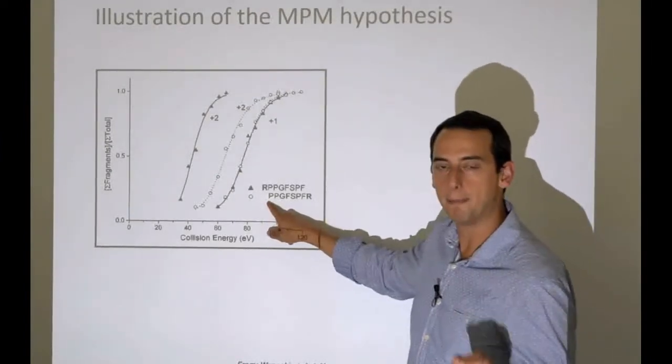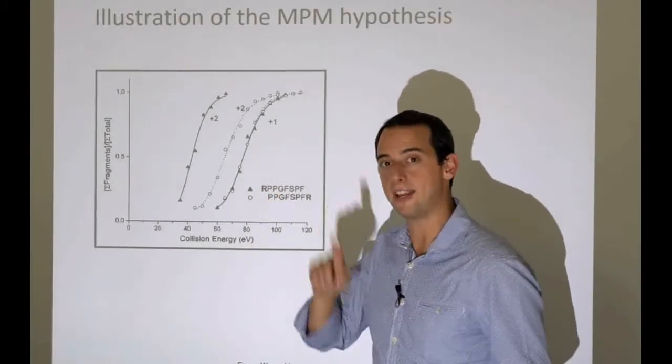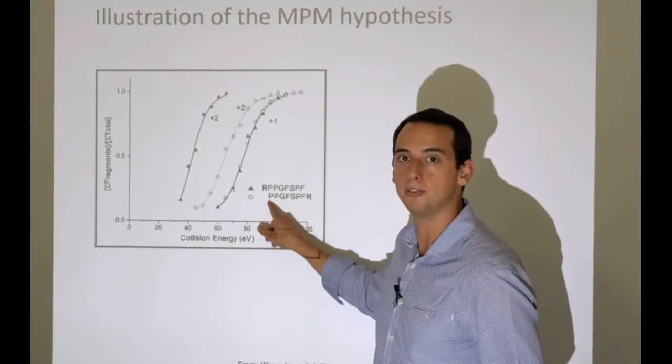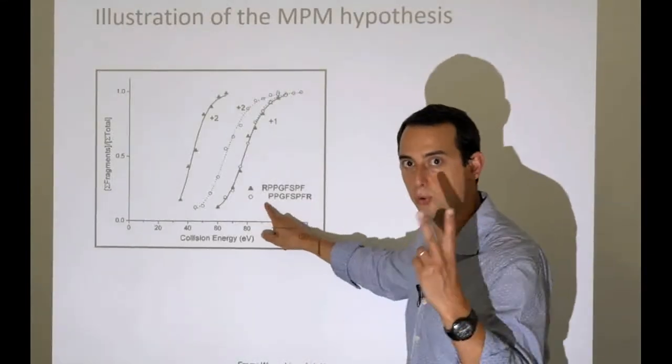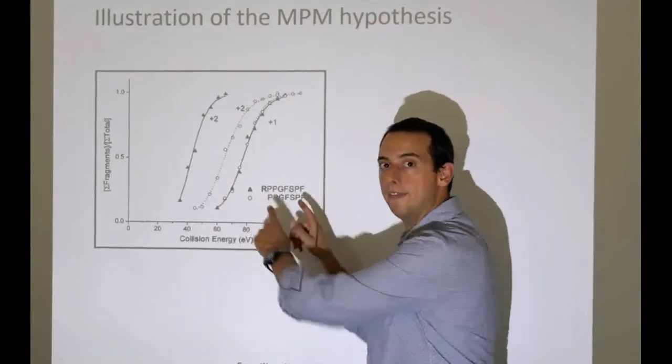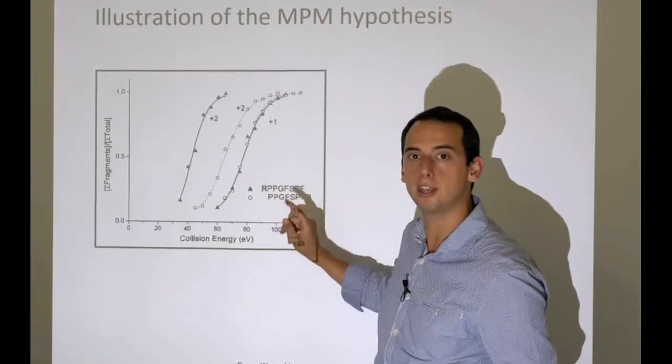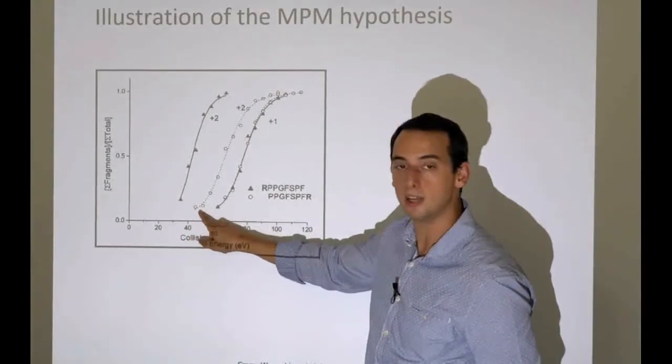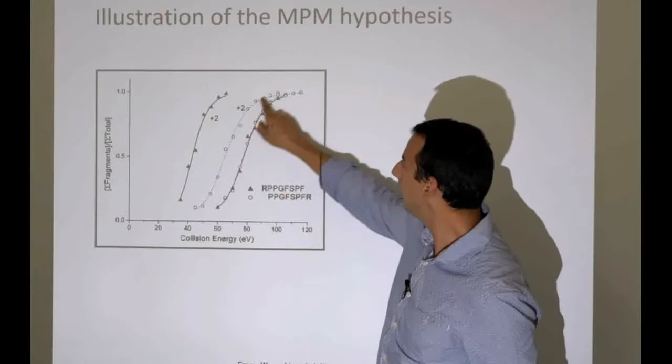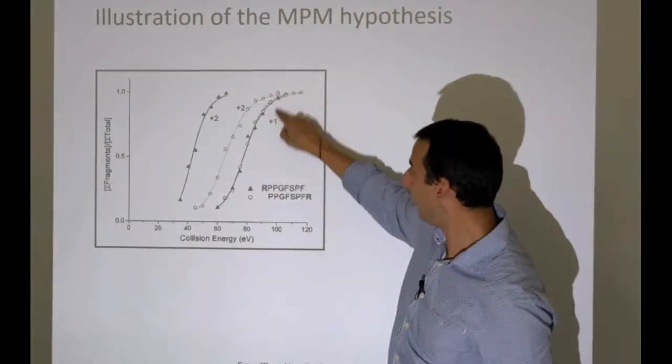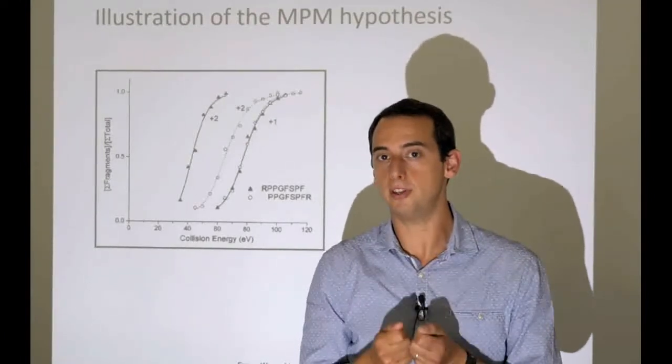As a result of this low energy state on the proline, the proton won't travel around. We've got two locked down protons, one here and one there. That situation leads to poorer fragmentation because we don't have a wandering proton like in the first case. The collision energies needed are very high—you only reach full coverage at the same energies as the singly charged state. This conclusively shows the mobile proton hypothesis is very valuable.